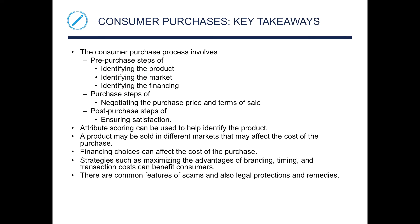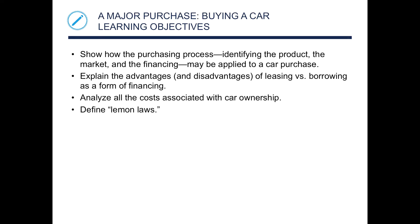Key takeaways of consumer purchases: the consumer purchase process involves pre-purchase steps of identifying the product, the market, and financing; purchase steps of negotiating the price and terms of sale; and post-purchase steps of ensuring satisfaction. Attribute scoring helps identify the product. A product sold in different markets may affect cost. Financing choices can affect cost. Strategies such as maximizing the advantages of branding, timing, and transaction costs can benefit consumers. There are common features of scams and also legal protections and remedies.